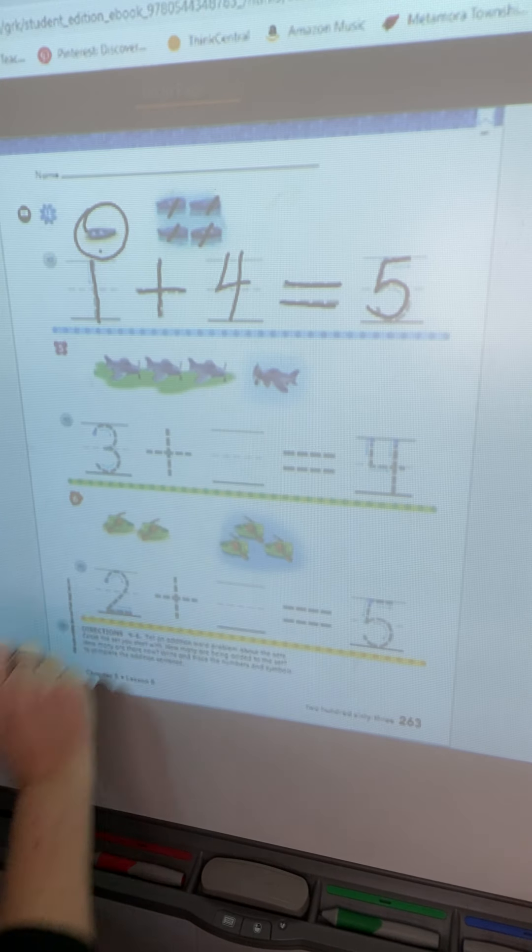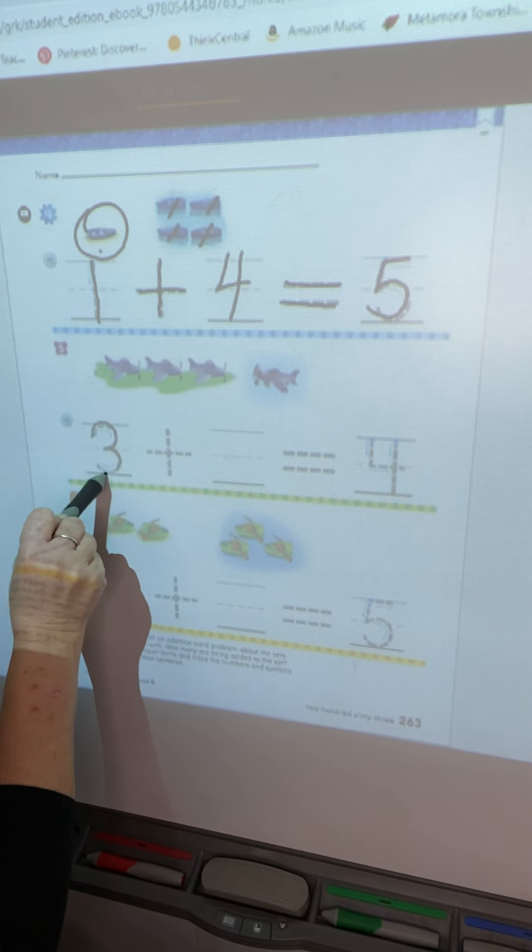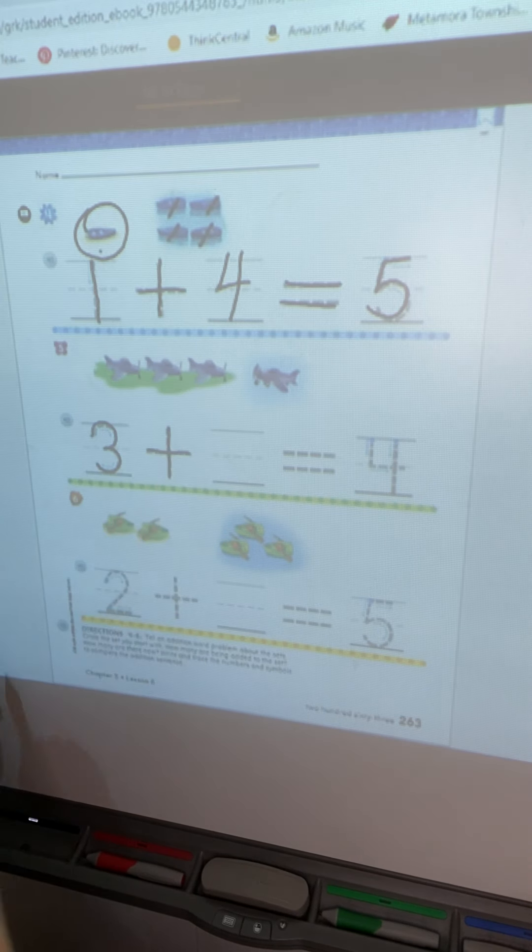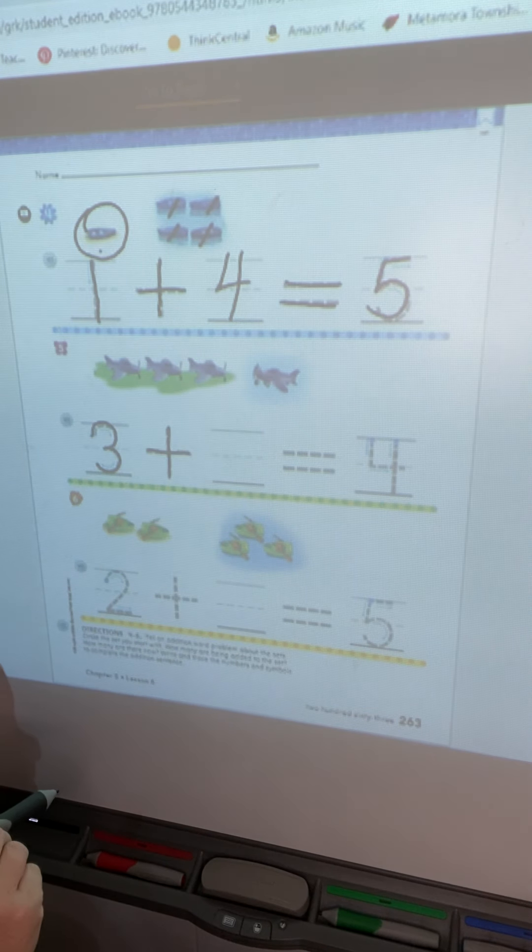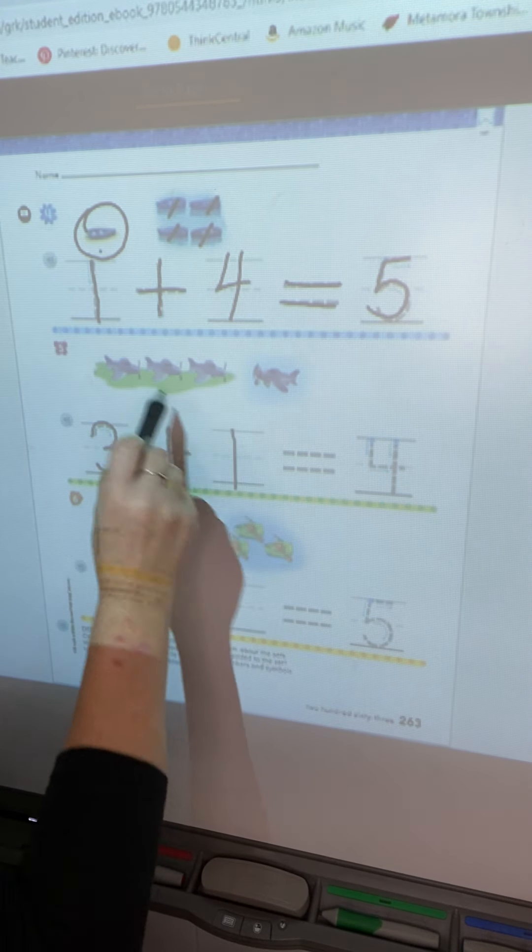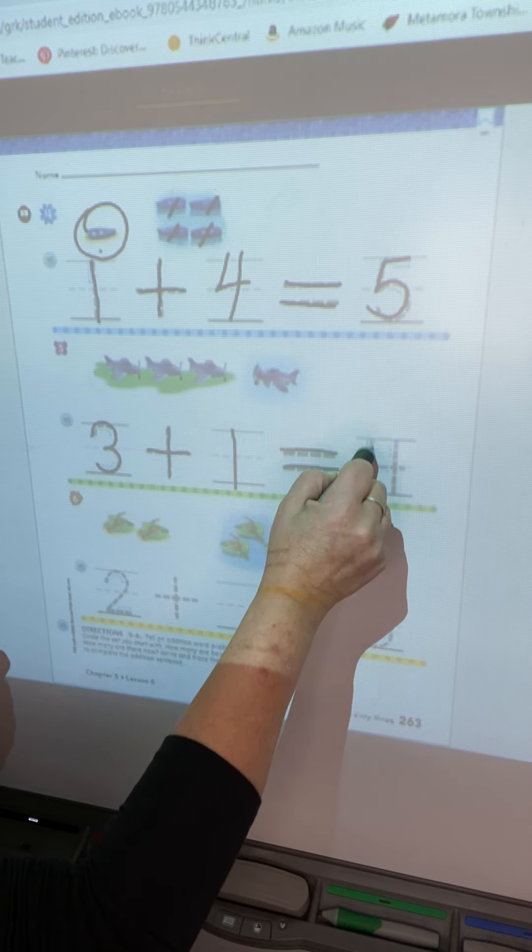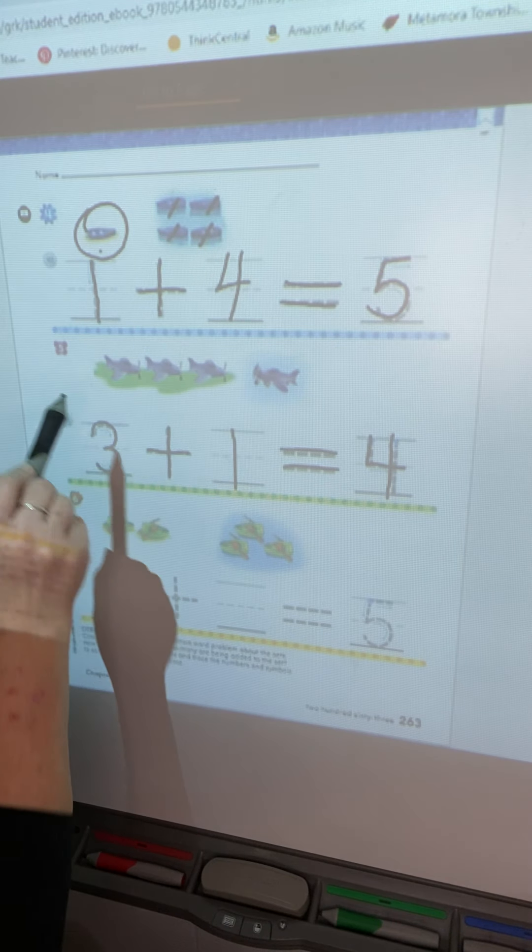So go ahead and trace that one. Plus how many more boats are we adding? Four. One, two, three, four. So we put a four. So if we start with one boat and we add four more, it says that it equals five. Let's check that out. Start by counting the first one. So one, two, three, four, five. One plus four equals five.